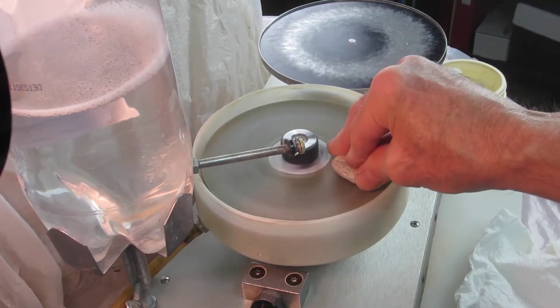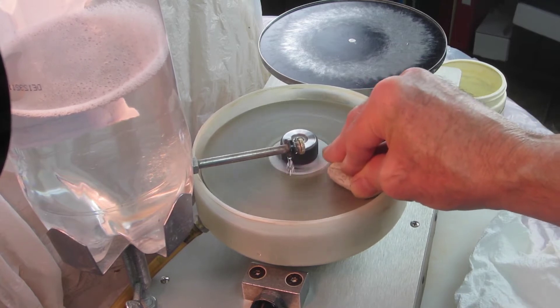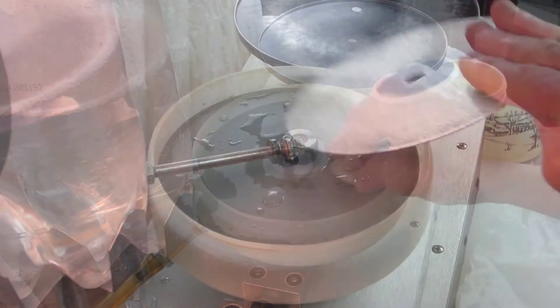So I'm using the 60 grit wheel right now. And we're going to take it through all the progressions all the way up to a polish.